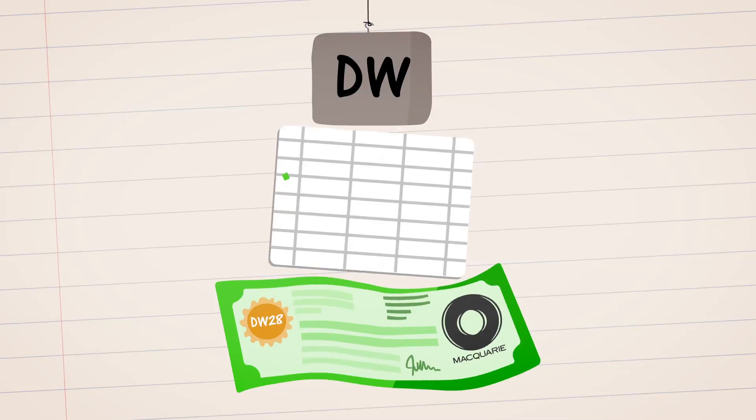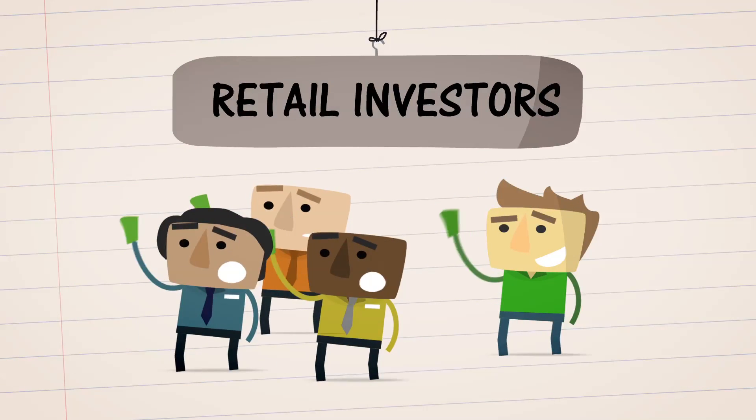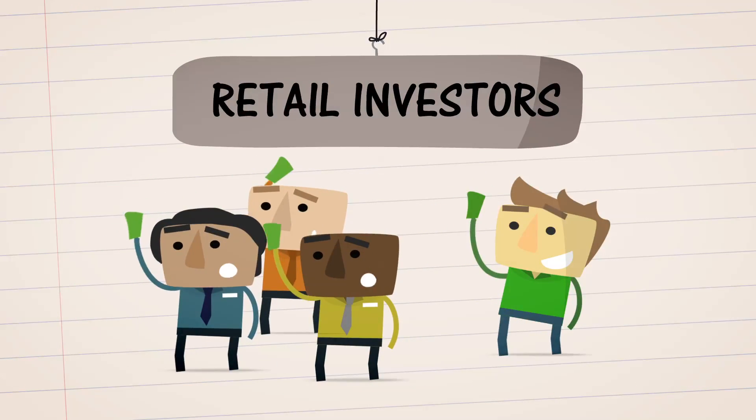Now DW tend to fluctuate in value at a higher rate than their underlying shares. This is known as the gearing effect and is the main reason why DW are so popular with retail investors.